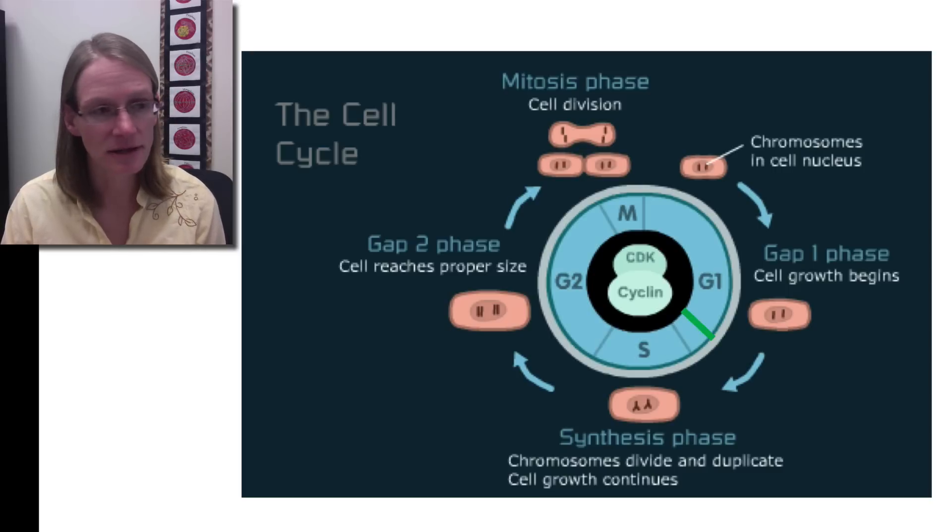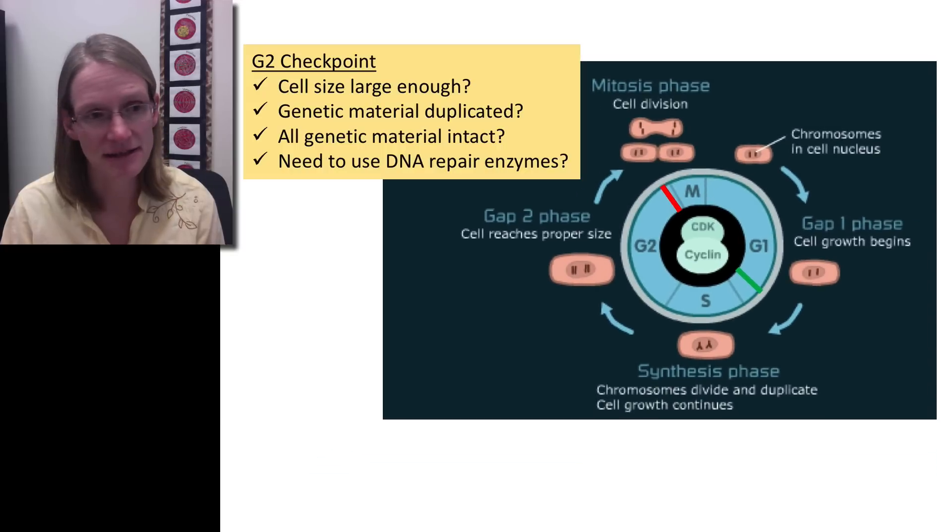And at that point, it's going to go ahead and replicate. And we know it's going to get to the next phase, which is G2, and it's going to keep growing again. And by the end of that phase, it's going to hit another checkpoint that you can see here, which is at the end of G2. And clearly a lot has happened in S phase in G2, so this is a very important checkpoint. And there's many things that get checked at this particular point.